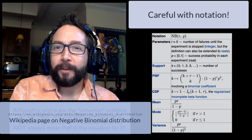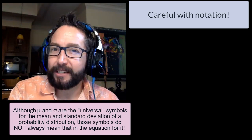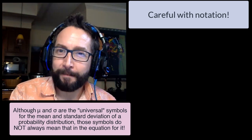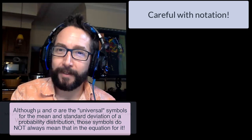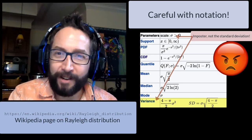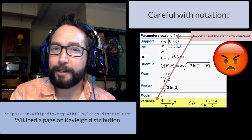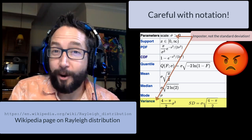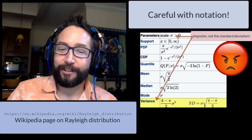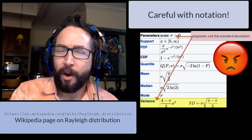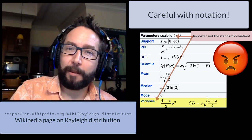Universally in probability and statistics, mu is our symbol for the expected value of a random variable, and sigma is our universal symbol for the standard deviation. But some people use mu and sigma in other contexts, so you have to be very careful when you actually read the definition of a PDF. If you see a mu and a sigma, ask yourself: is that actually the mean and standard deviation, or is that just the choice made to parameterize that distribution?